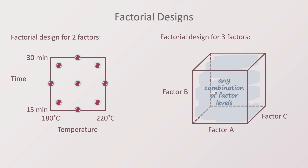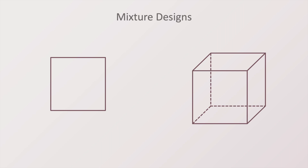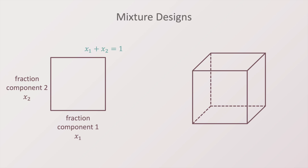On the other hand, mixture designs are different. For a mixture of two components, let's represent the fraction of component one on the horizontal axis and the fraction of component two on the vertical axis. In mixtures, the sum of the fractions of the components must be 1, or 100%, meaning they cannot vary independently. The combination of x1 and x2 must obey the constraint x1 plus x2 equals 1, which corresponds to the diagonal of the square. We cannot have any combination outside this line.